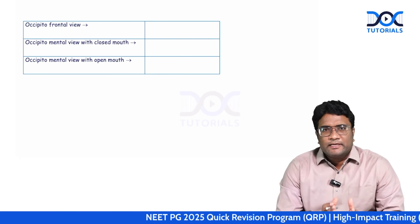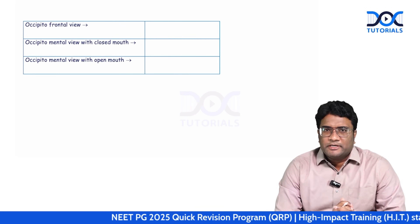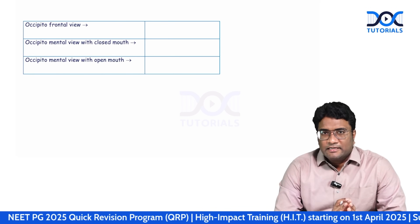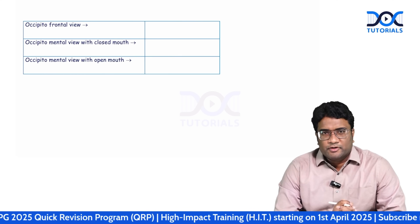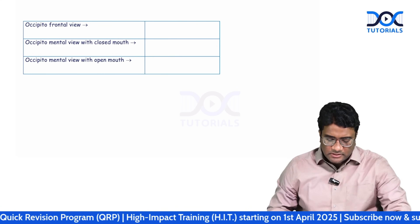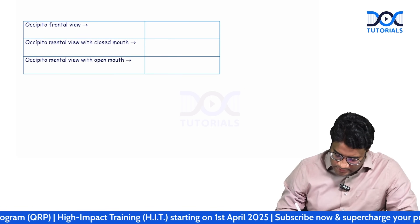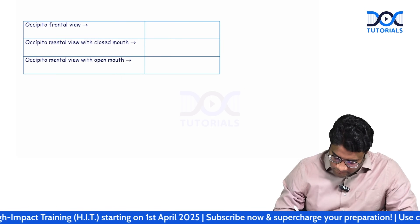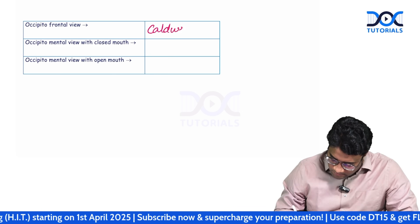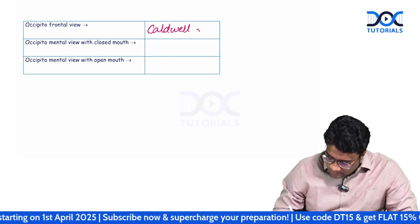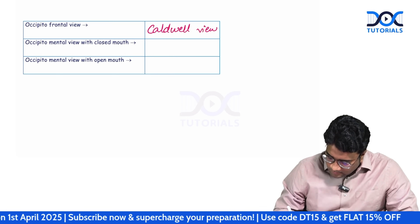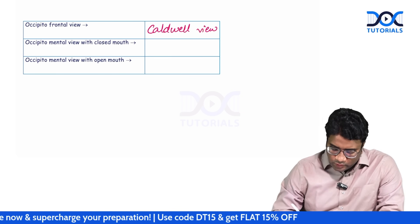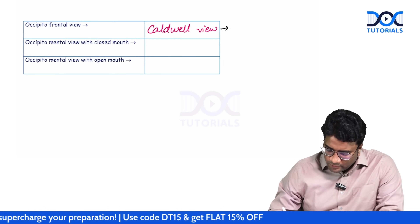Let's quickly look into some important radiographs. The first is the occipitofrontal view — this is the Caldwell view. What is the Caldwell view used for? This is for the frontal sinus.